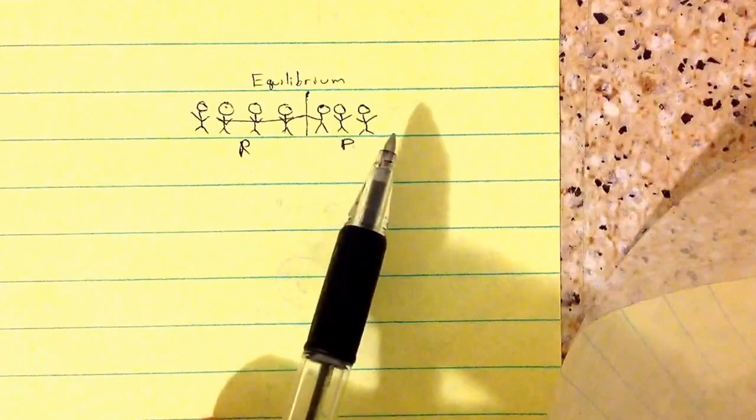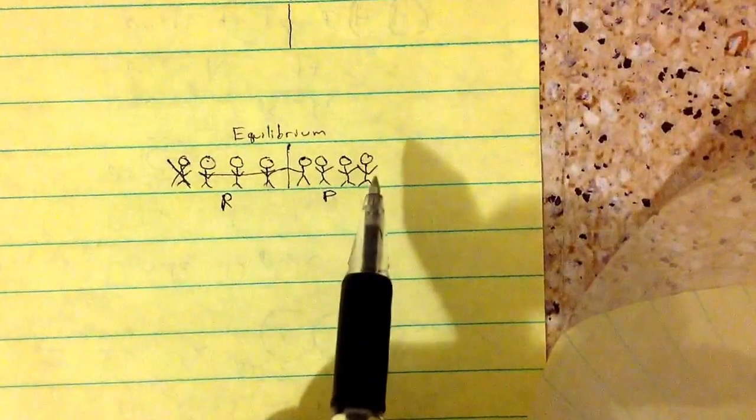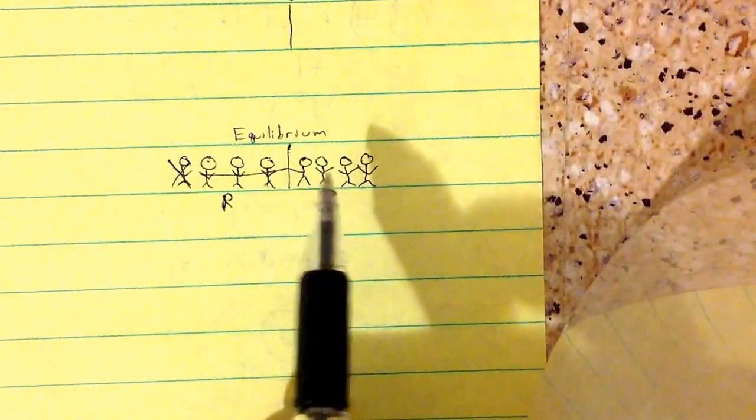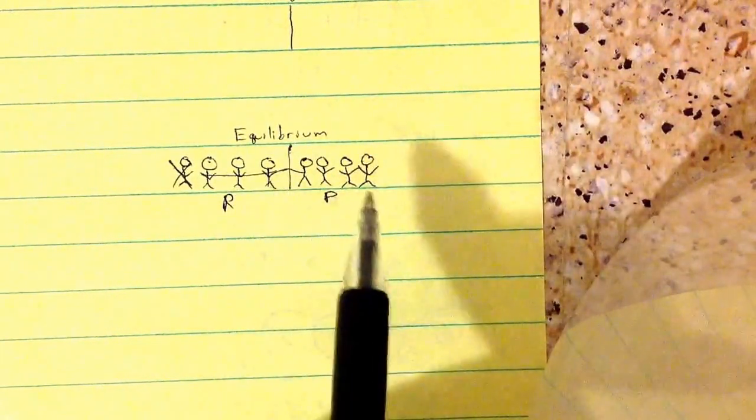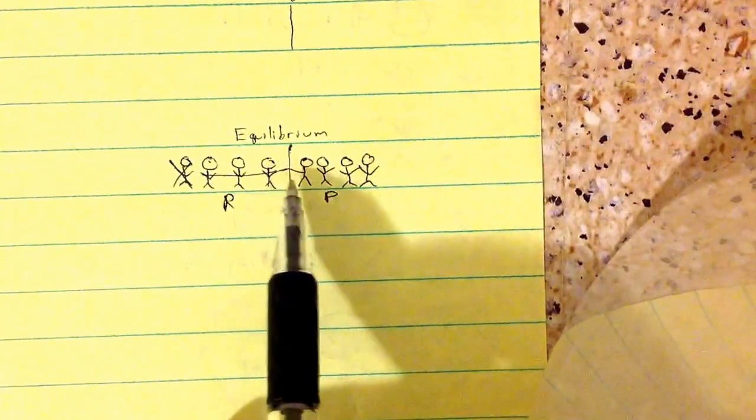Same thing here. If you added, let's say we get rid of this guy and we add one guy here. Now there's four people on the right side and three people on the left side. So now since the right side is stronger, they're going to push the equilibrium to the left.